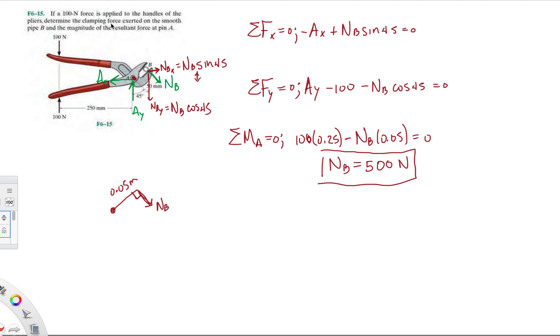We just plug that back into equations one and two. When we do the arithmetic and move everything to the right side, we end up getting AY is 453.6 newtons, give or take. Plugging it here, we get AX is 353.6 newtons.